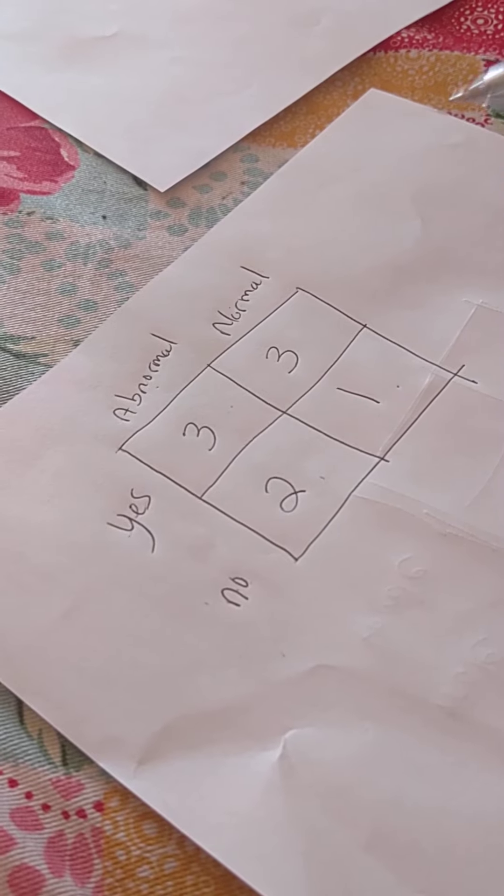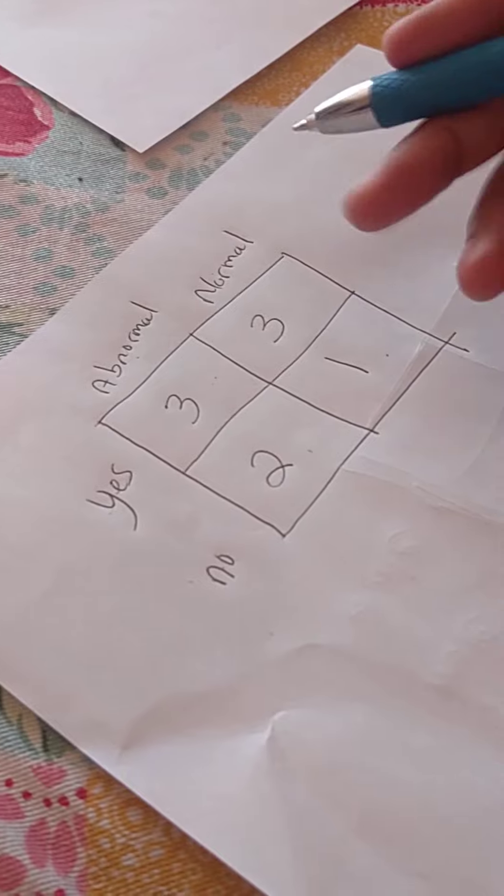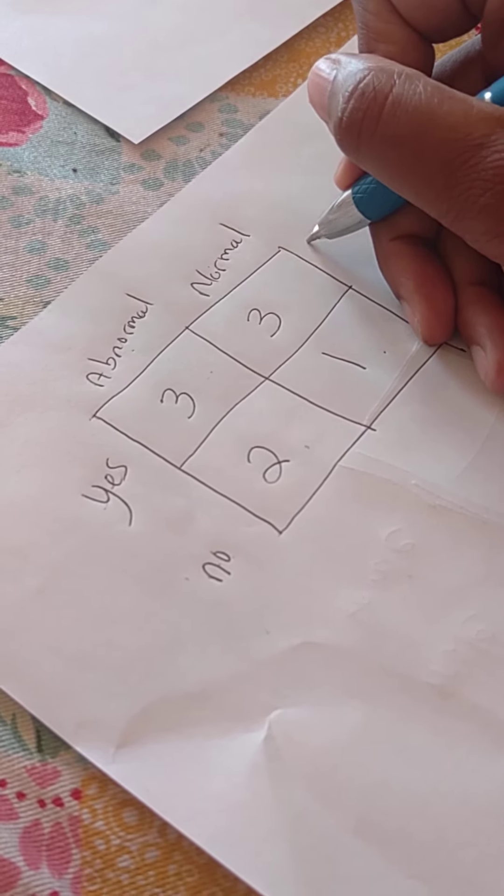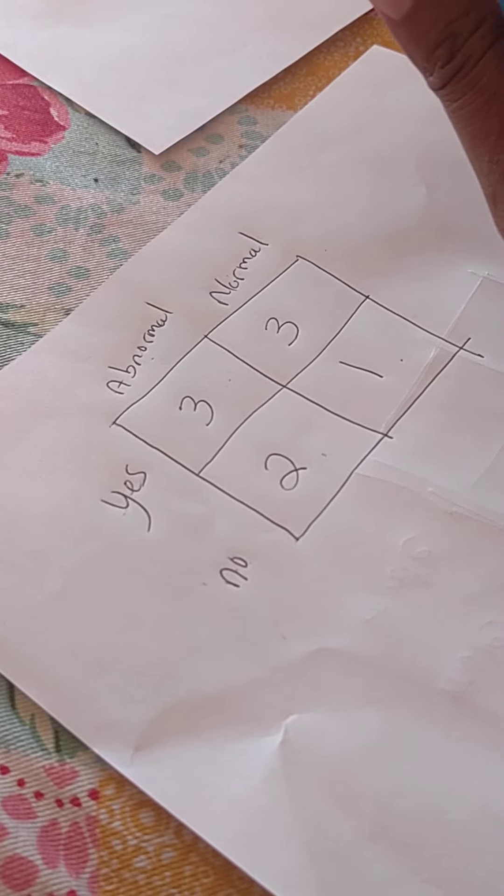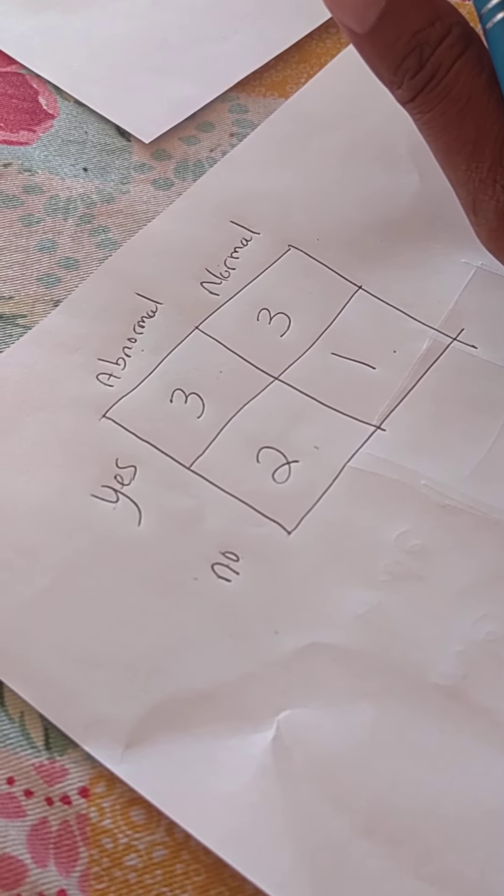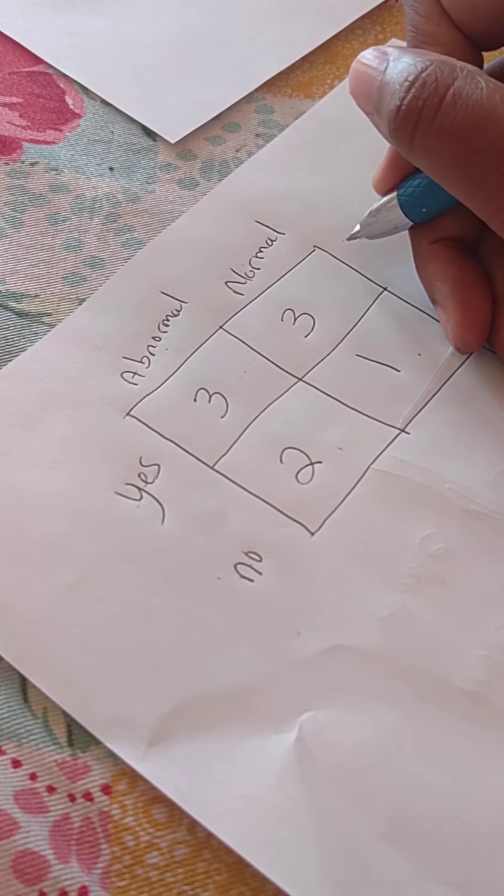And your chi-square test compares your expected to your observed. So, if you wanted to calculate your expected, and by the way, these numbers are too low for you to do a chi-square test. You should really get a sample size calculation. But let's just keep going.